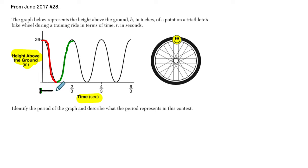it took two-thirds of a second to complete one cycle of this cosine wave, this is a cosine wave, or one rotation of the wheel. And what I'm identifying right there is the period of the graph. The period is two-thirds of a second.